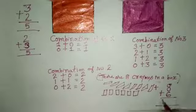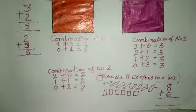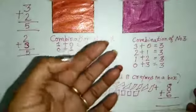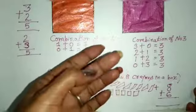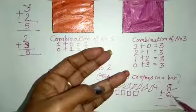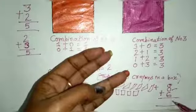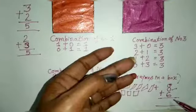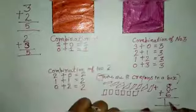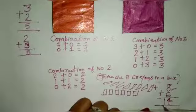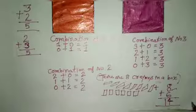Now count. Ab isko aap count karenge — fingers pe. One, two, three, four, five, six, seven, eight — eight hum ne count kar liya. Ab hum ko six ko count karna hai: nine, ten, eleven, twelve, thirteen, fourteen. Answer is fourteen. Kitne crayons huye? Fourteen. Box me kitne crayons hain? Fourteen.